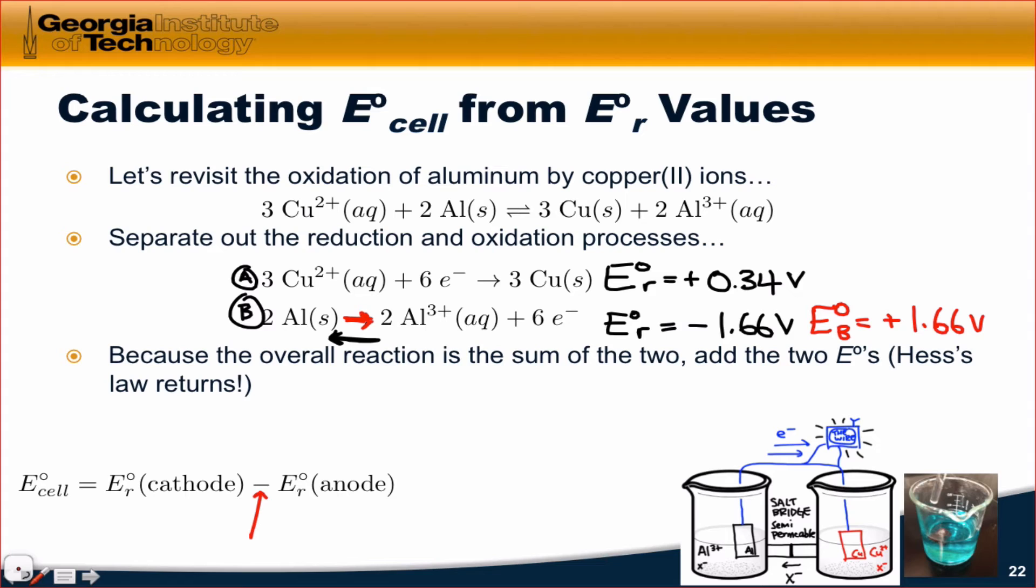Now that we've written it this way, we can simply add these two together and find that the overall cell voltage is equal to 0.34 volts, that's the potential happening at the cathode, which is here on the right-hand side of the drawing, plus 1.66 volts, that's the potential for the opposite of reduction, oxidation happening at the anode here on the left.